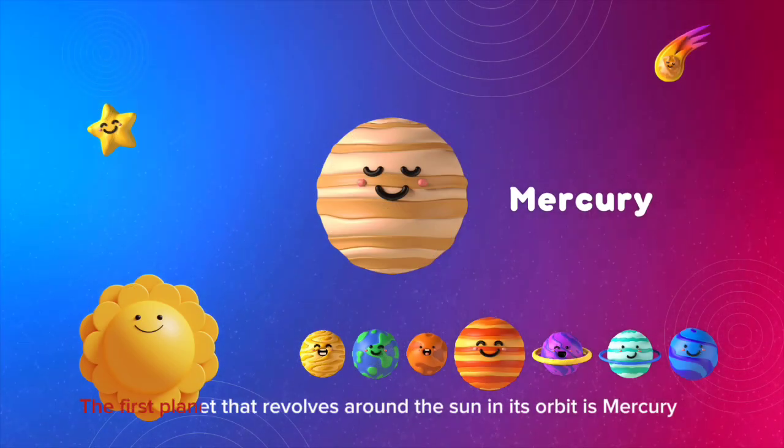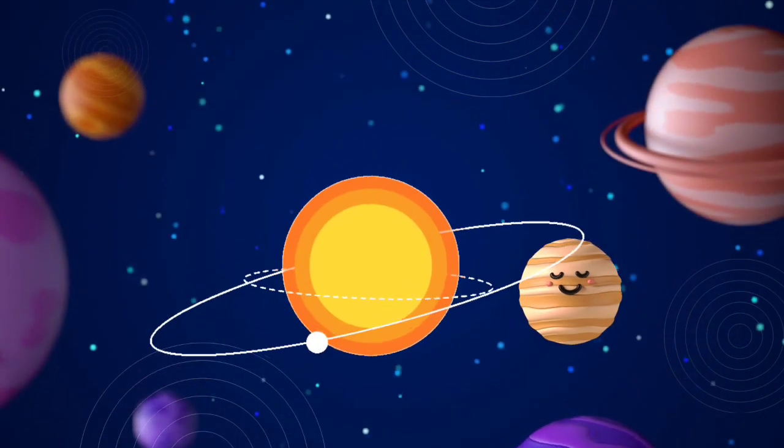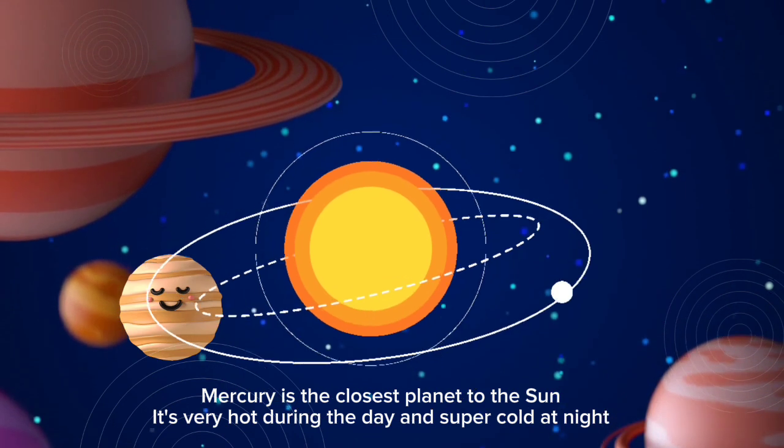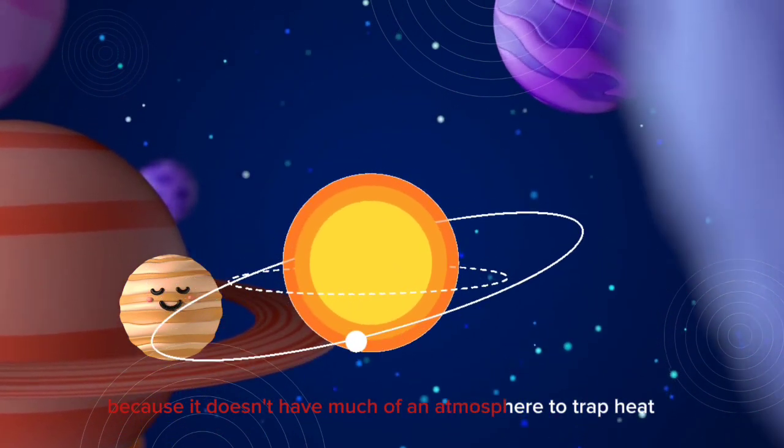The first planet that revolves around the sun in its orbit is Mercury. Mercury is the closest planet to the sun. It's very hot during the day and super cold at night because it doesn't have much of an atmosphere to trap heat.